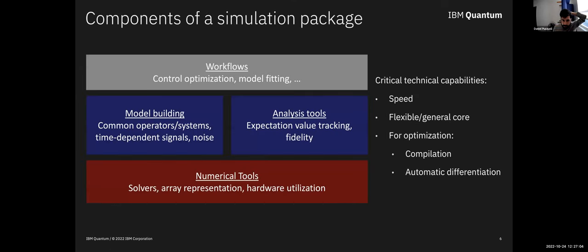If you want to do this kind of simulation, what are the types of features you might want to look for? Obviously, the foundation of a package that does this kind of simulation is going to be the numerical tools - different differential equation solvers, different array libraries or representations, hardware utilization using GPUs, HPC things. You want to have those things built in. Then at a slightly higher level, you're going to have model building and analysis tools. Being able to describe the simulation, build your Hamiltonian in whatever way the package accepts - can you do that conveniently or not? Once you've built that and do your simulation, can you analyze the results effectively?